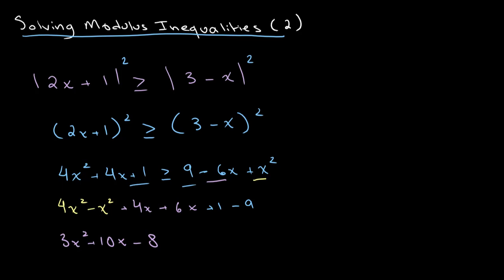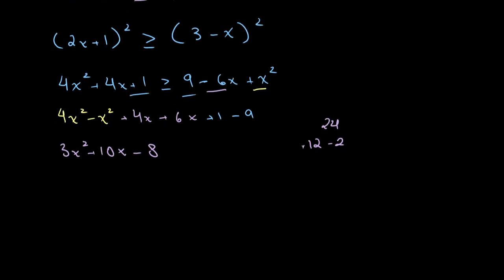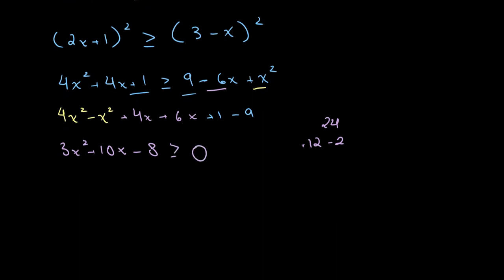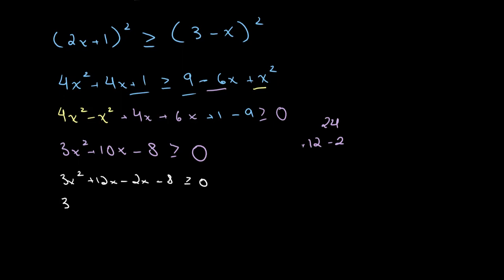To factorize 3x squared plus 10x minus 8 greater than or equal to 0: multiplying 3 and 8 gives 24, and we can use 12 and 2 — so plus 12 minus 2. Splitting the middle term: 3x squared plus 12x minus 2x minus 8, which factors to give 3x minus 2, times x plus 4, is greater than or equal to 0.